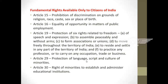Article 29 is the protection of language, script, and culture of minorities. In India there are six minorities — Muslim, Jews, Christian, and others. Article 30 is the right of minorities to establish and administer educational institutions. These are the fundamental rights applicable only to citizens of India.